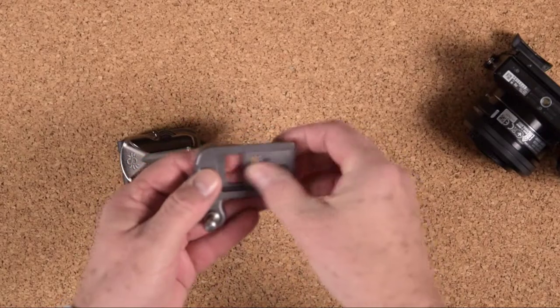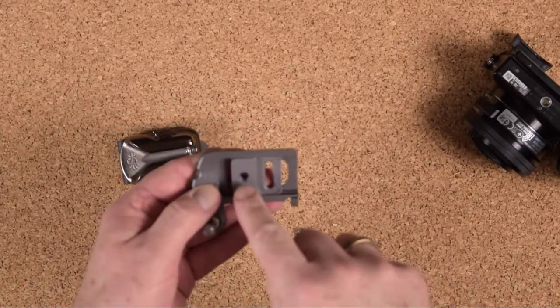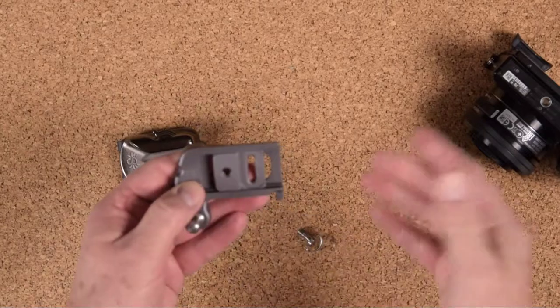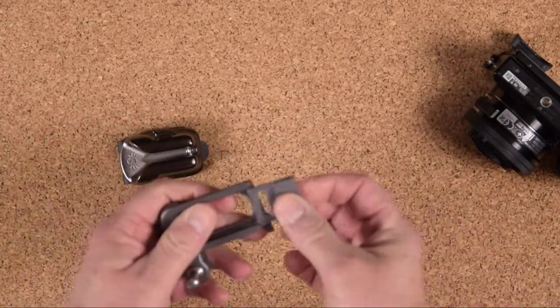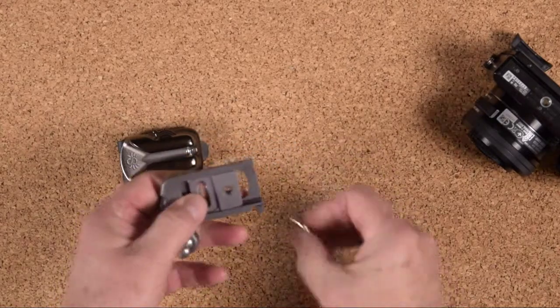You just slowly back the bolt out, take it out, and turn the piece around. That positions your tripod mount in a different location so it doesn't interfere with the battery door on the bottom of the camera.